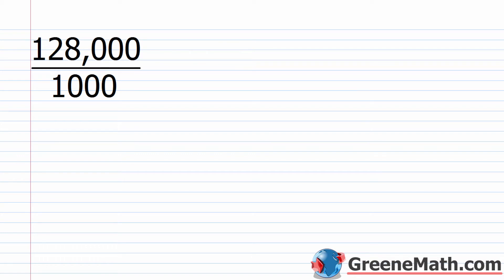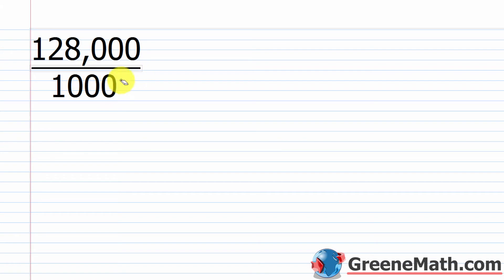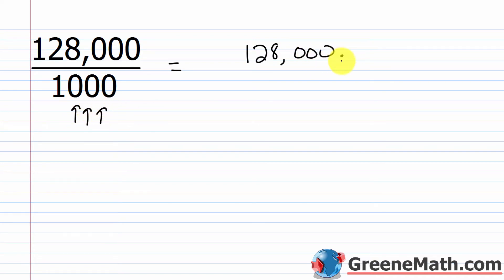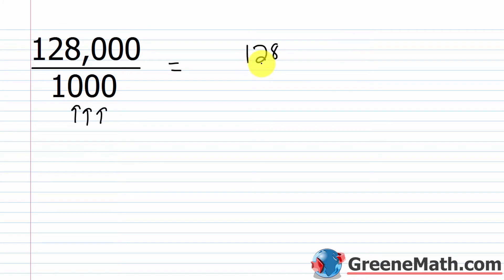By canceling zeros — removing a factor of 10 each time — we get 128 over 1, which is 128. Alternatively, write 128,000 with the decimal point and move it three places to the left, again arriving at 128.